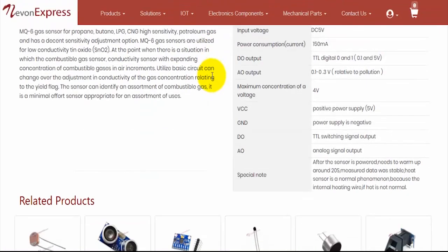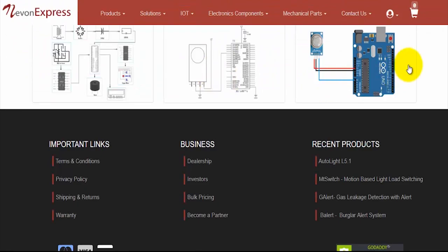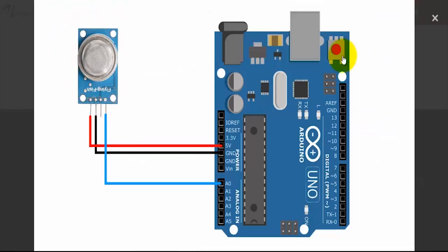So getting back to the discussion, now let's go on to interfacing with Arduino. As you can see, the VCC pin is connected to 5V of Arduino, ground pin is connected to ground and the A0 pin is connected to analog 0 of Arduino.